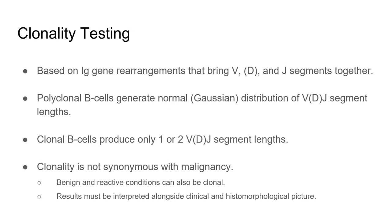Clonality testing. The idea behind clonality testing is to determine if a population of B lymphocytes are derived from a single clone or are polyclonal. This is accomplished by looking at the distribution of VDJ segments. If the cells are polyclonal, there will be a Gaussian distribution for the size of the final VDJ constructs. If there is a clonal process, only one VDJ construct is being produced. It is important to note that a clonal population is not necessarily synonymous with malignancy — there are benign and reactive conditions that can also result in clonal B cells.